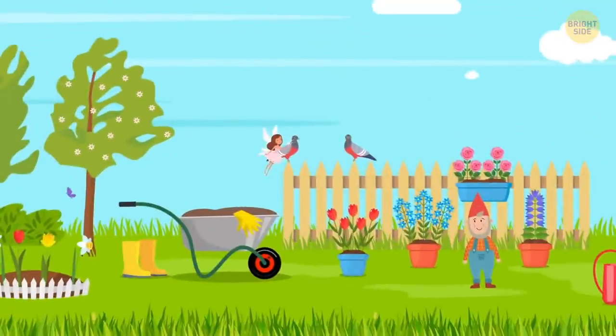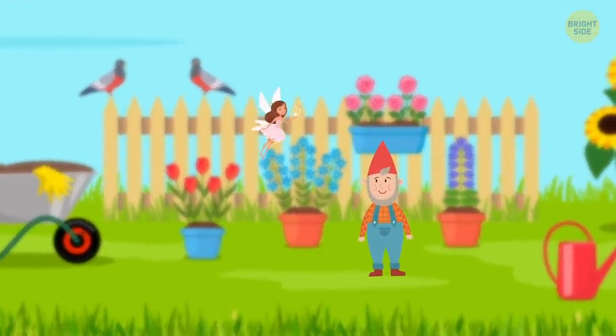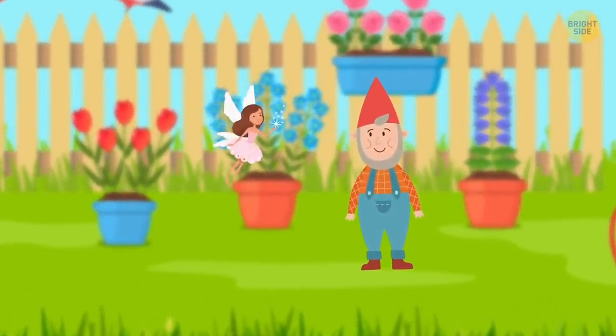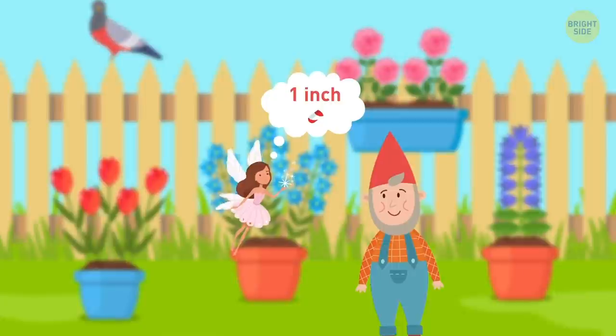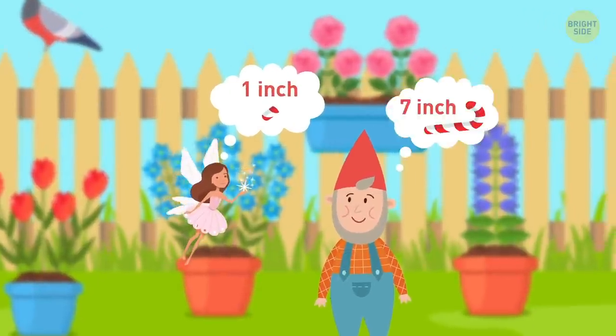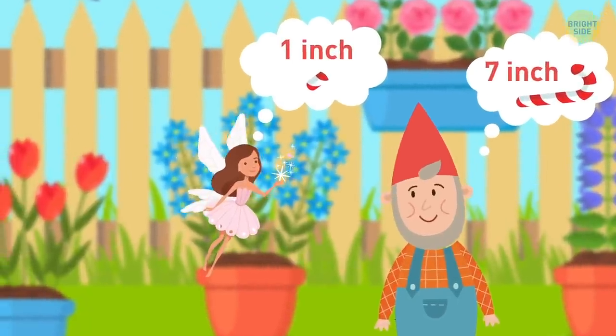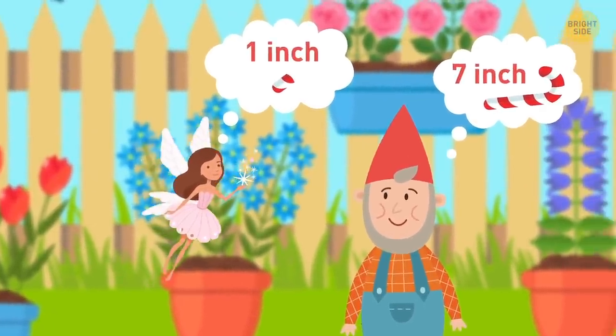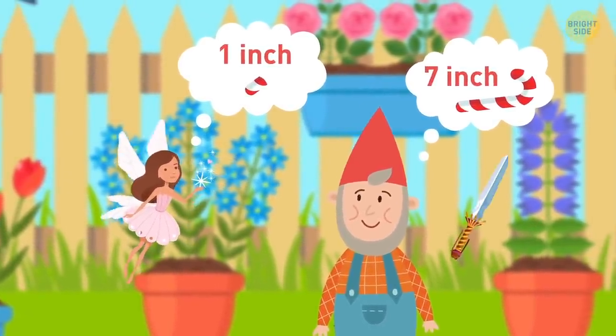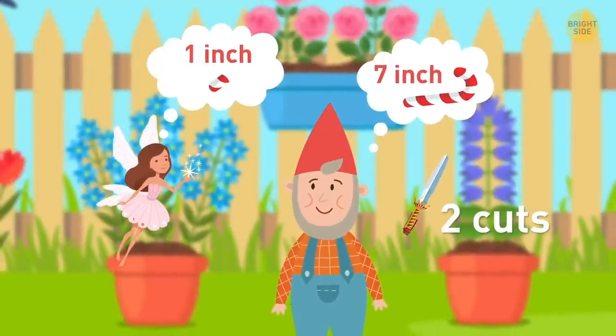An elf hired a fairy to take care of his garden for a week. As a daily payment, the fairy takes one inch of a candy cane. The elf has a seven-inch candy cane in one piece. But the fairy wants to be paid every day because fairies don't trust elves. The elf has a knife that can only make two cuts. How can he manage?